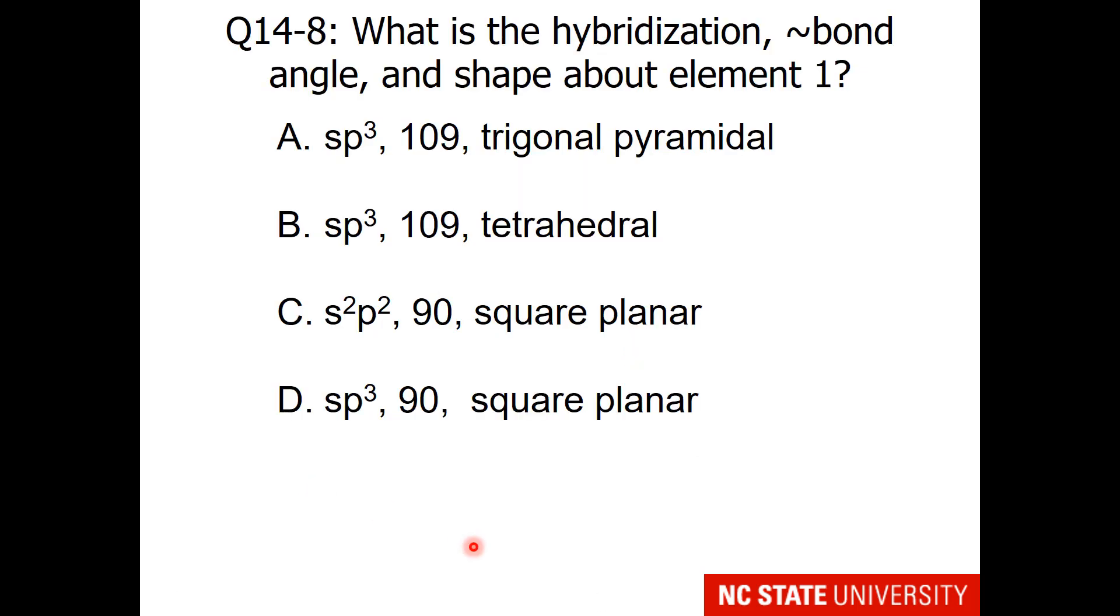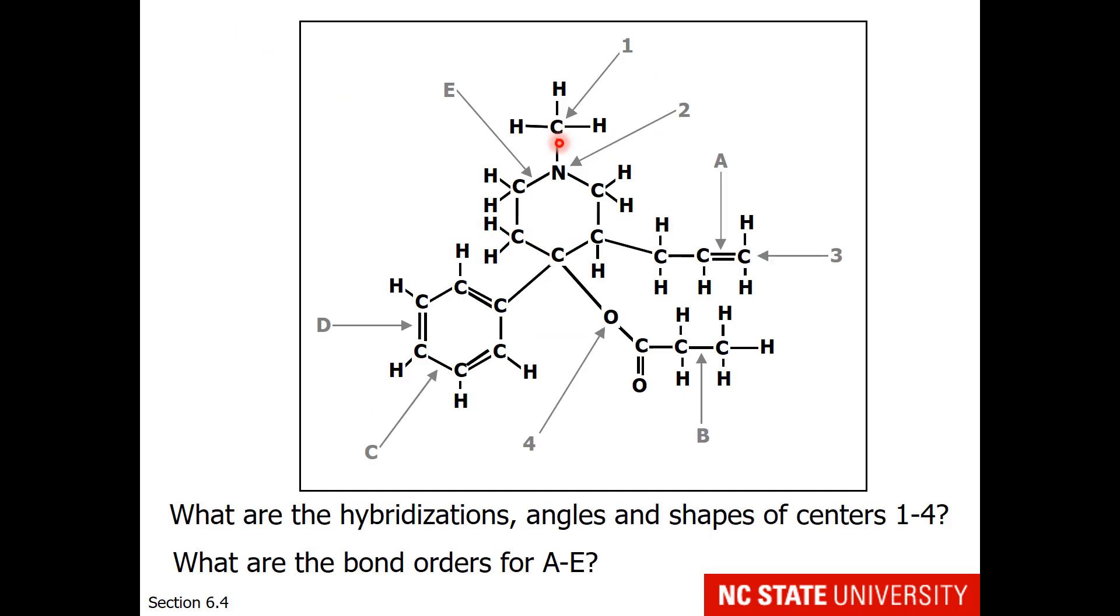So our first question asks for hybridization, approximate bond angle, and shape about element 1. So that would be this carbon right here with 4 single bonds.